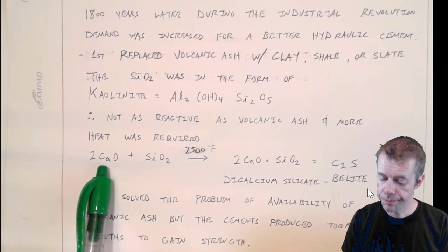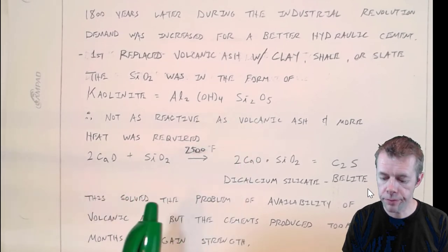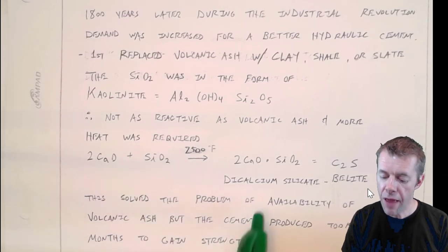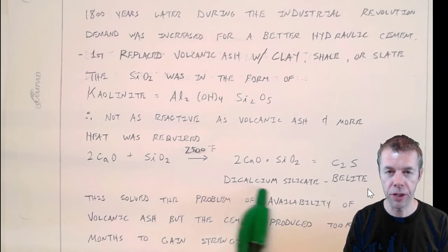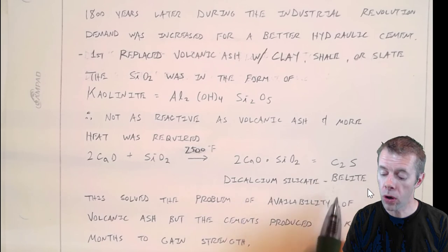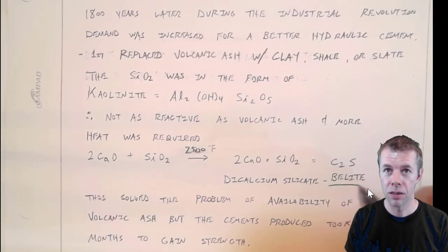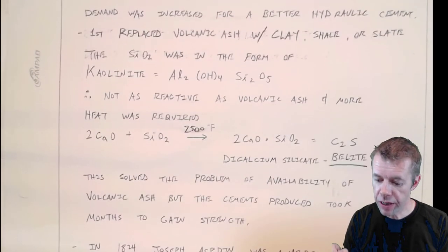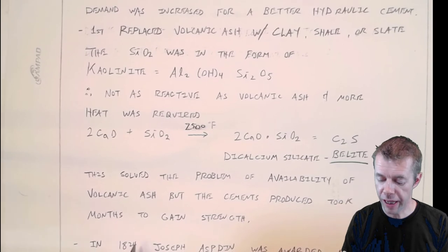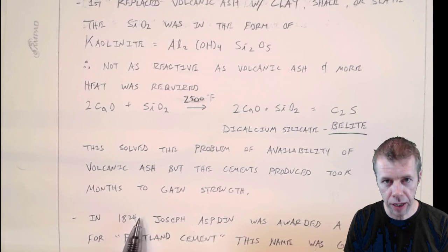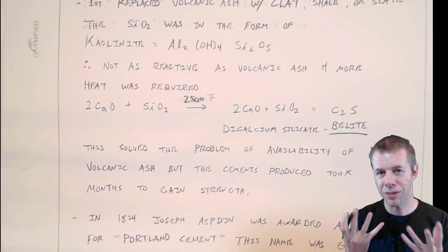So, they took the quicklime. They got this SiO2, silicon dioxide. They cooked it at a higher temperature, and they were able to produce dicalcium silicate. Dicalcium silicate. And this, in cement chemistry shorthand, is known as C2S, or also known as belite. This solved the problem of the availability of the volcanic ash. But, again, the cements took months, months to gain strength. And that just wasn't what people wanted.